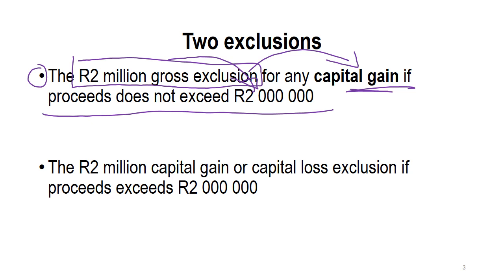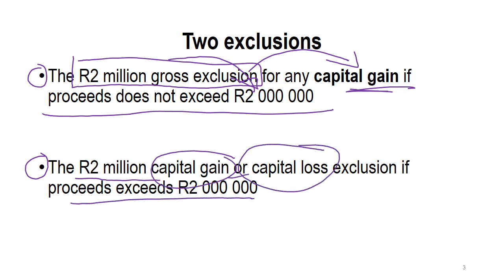The second exclusion is the two million rand capital gain or capital loss exclusion, which applies if proceeds exceed two million rand. So if you sell your residence and your proceeds exceed two million rand, you are going to use the two million rand capital gain or capital loss exclusion. Note also that if your proceeds do not exceed two million rand and you're in a capital loss situation, you will also be using this second exclusion.